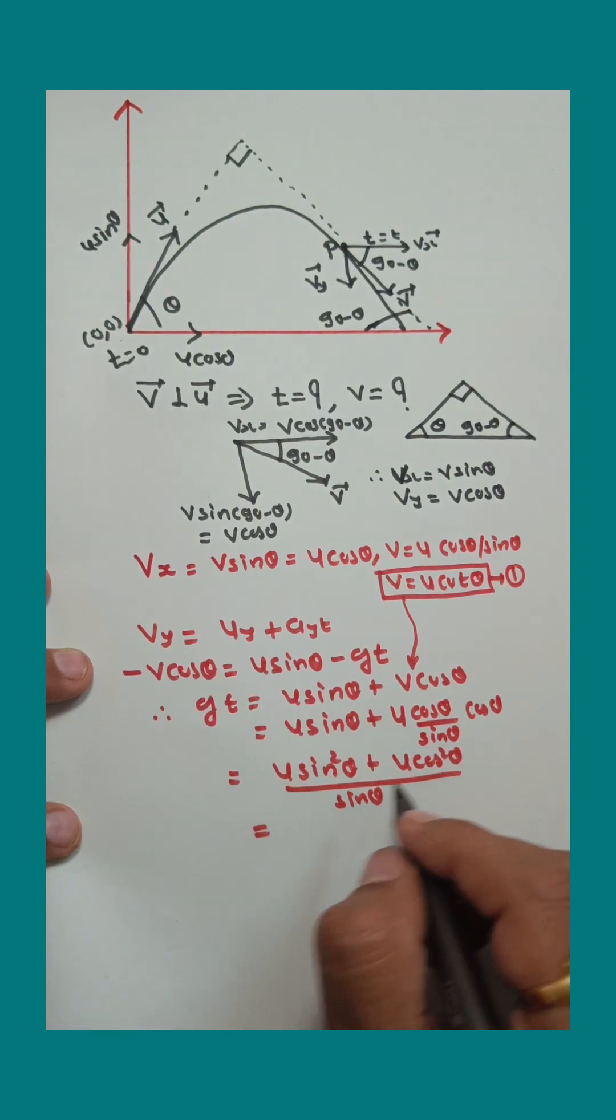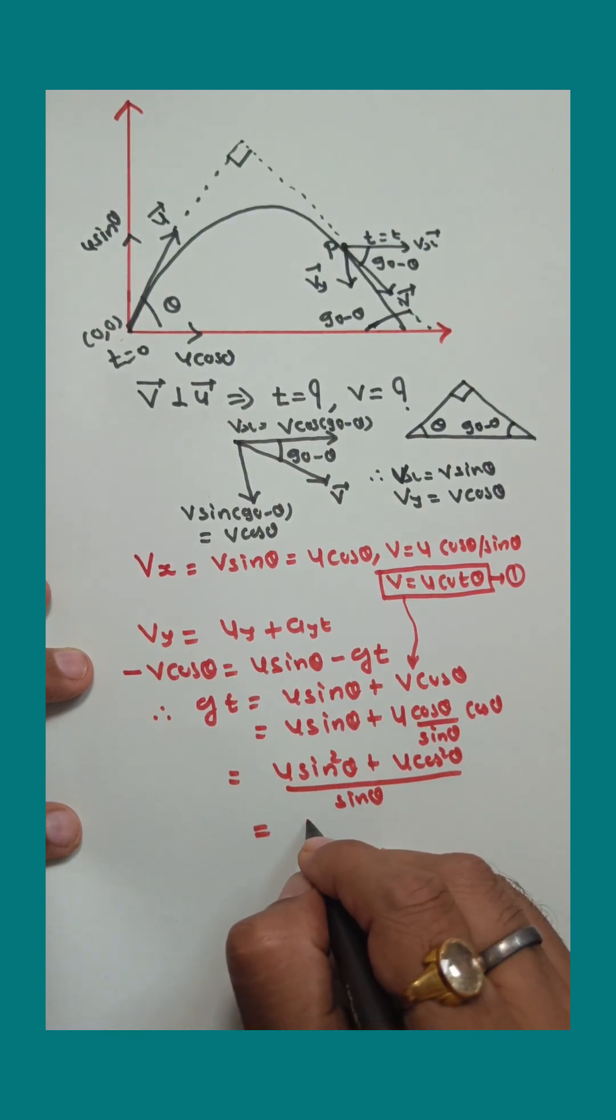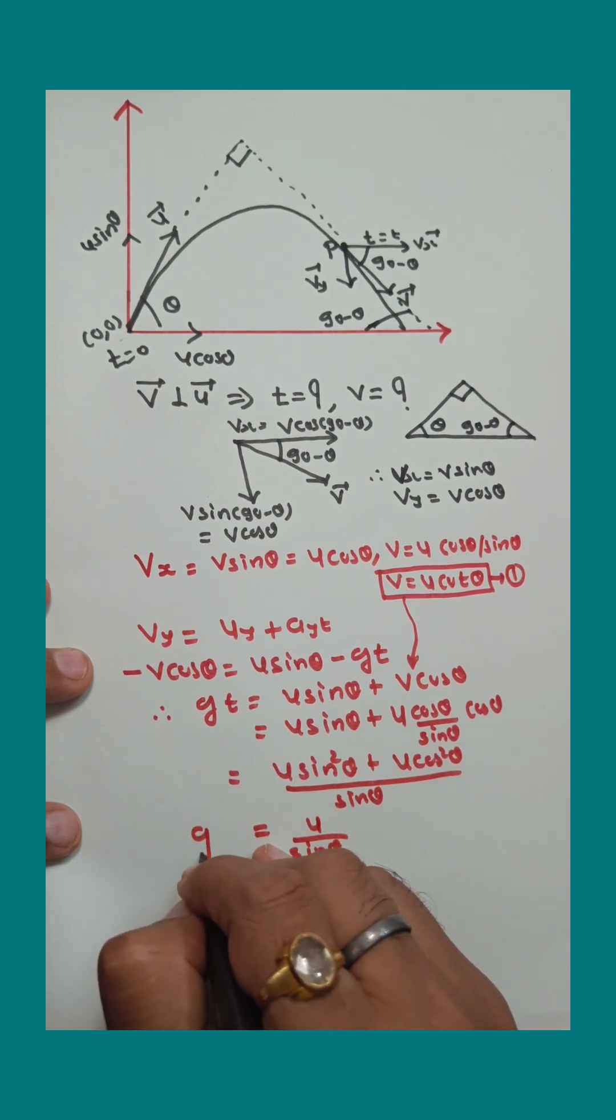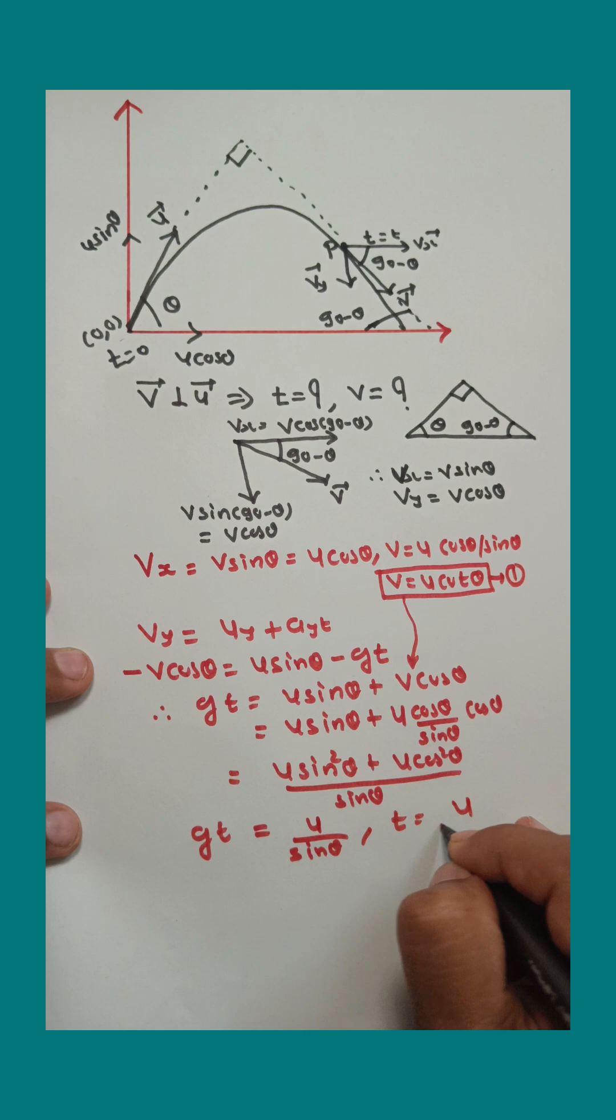So the answer is u sin squared theta plus u cos squared theta upon sin theta. U is common, and sin squared theta plus cos squared theta is 1. So here it is u upon sin theta. That is the answer of gt. So time t equals u upon g sin theta.